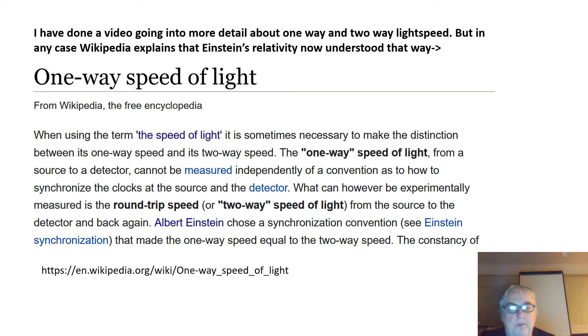This is a quote from Wikipedia: 'When using the term the speed of light, it's sometimes necessary to make the distinction between its one-way speed and its two-way speed. The one-way speed of light from a source to a detector cannot be measured independently of a convention as to how to synchronize the clocks at the source and the detector.'